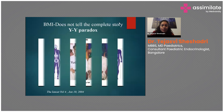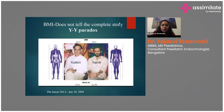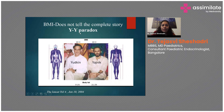This is illustrated by the Yudkin-Yajnik paradox. These two professors — Yudkin and Yajnik — have a very gross difference in physical appearance, yet both were noted to have the same BMI of 22.3. However, when body fat analysis was done, Yajnik had a significantly higher body fat of 21.2 percent while Yudkin had a very normal body fat of 9.1 percent. This shows that BMI alone does not tell the complete story.